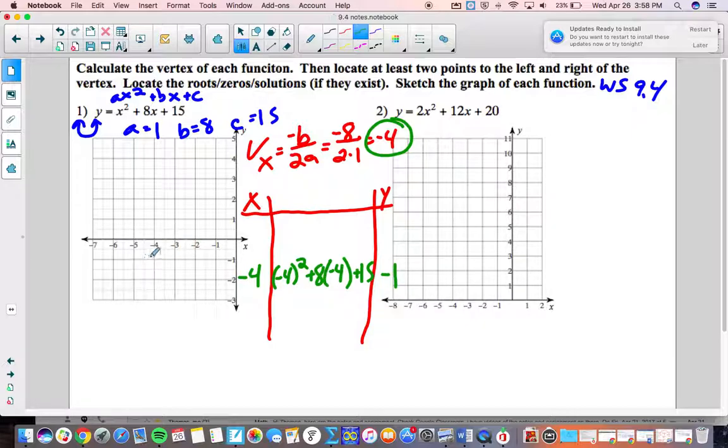So right now I know that the bottom of this smiley face, the vertex, is at negative 4, negative 1. So check out your scaling here. Be careful. So that would be right there.